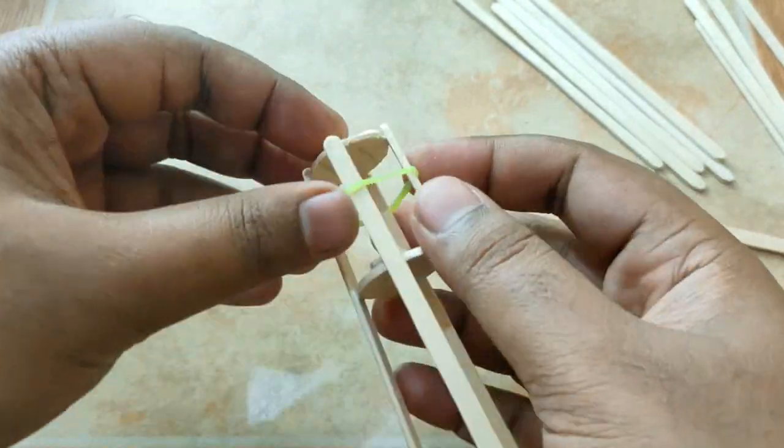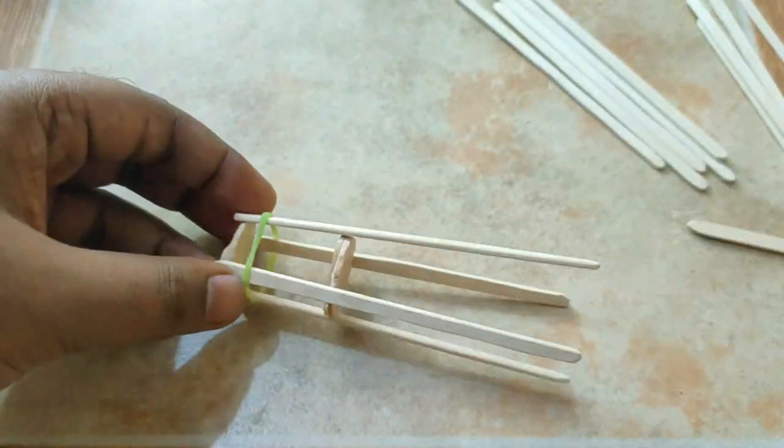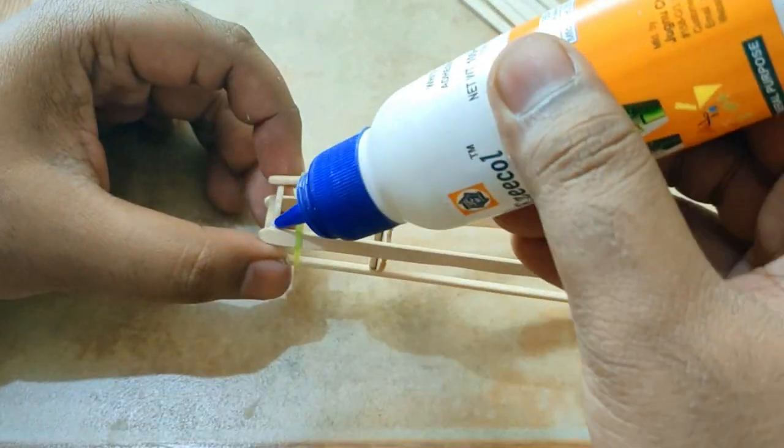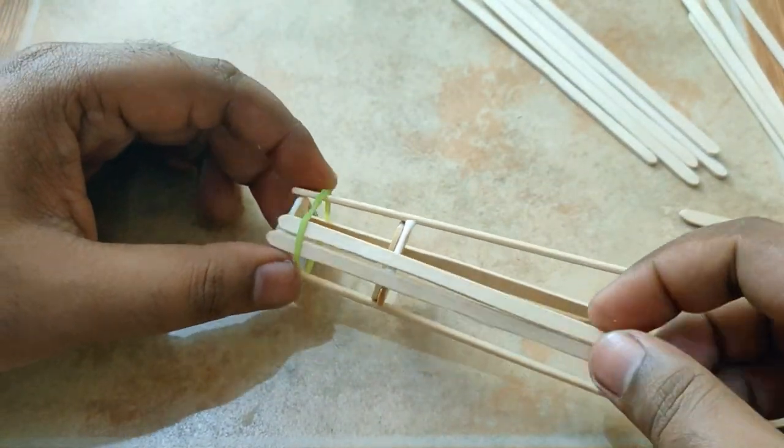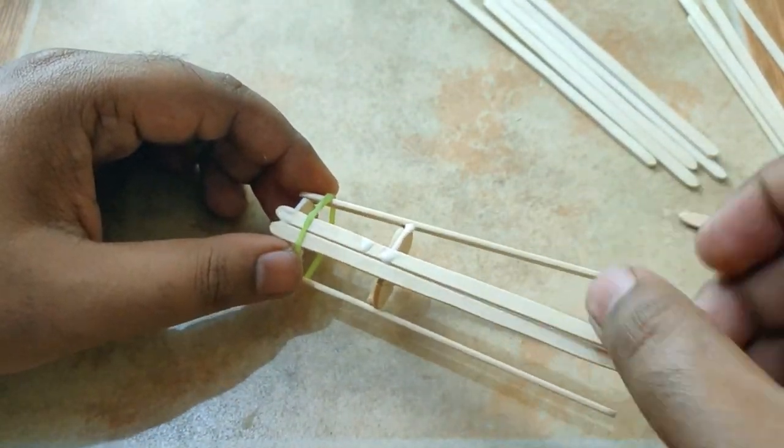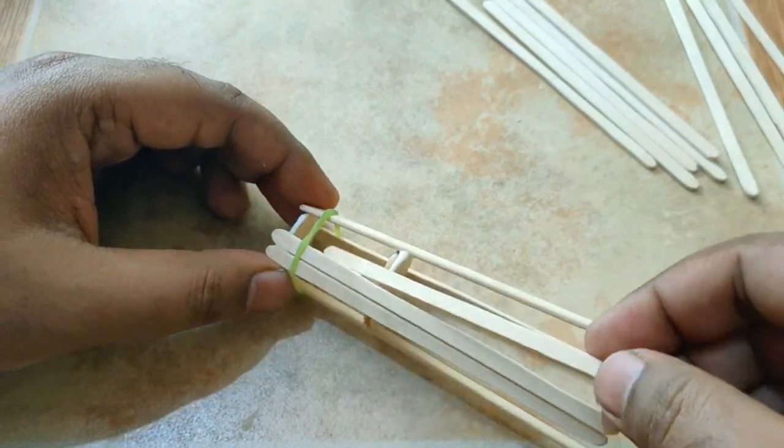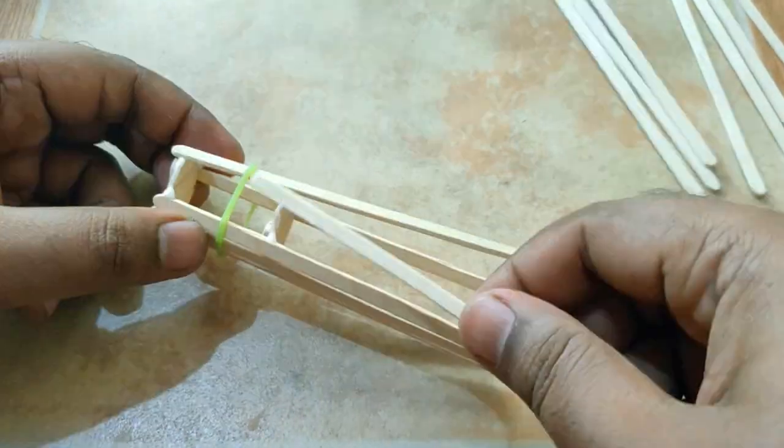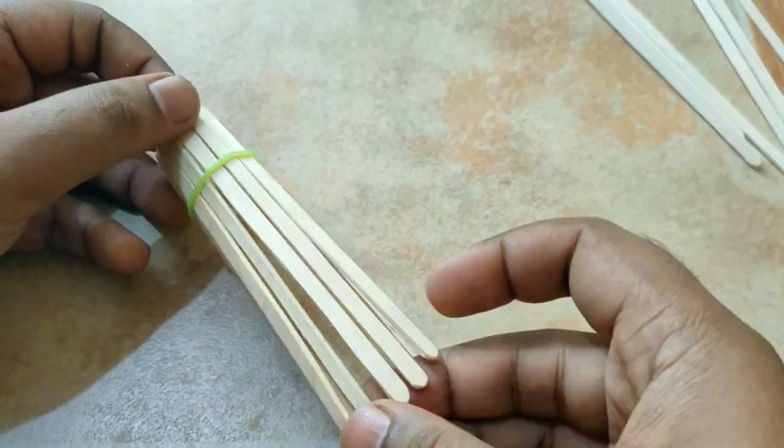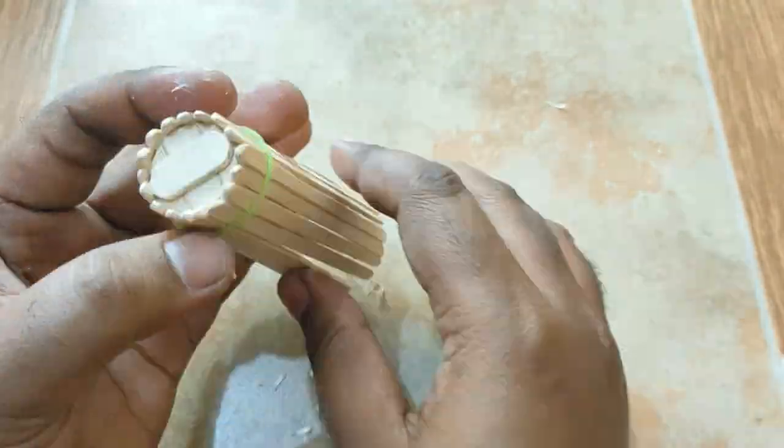I'm using this rubber band to hold those sticks in their proper place and help to fix it. Apply glue and start sticking these sticks. One by one I stick all these sticks. Once the sticking is done, it will look like this.